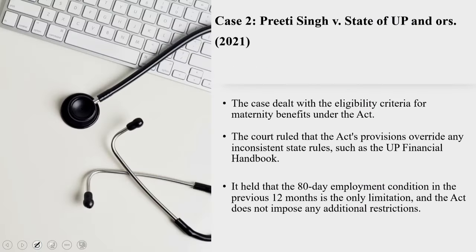Similarly, in Preeti Singh versus State of UP and others 2021, the Allahabad High Court addressed the issue of maternity leave eligibility, focusing on the interpretation of state financial rules that conflicted with the Maternity Benefit Act 1961. The petitioner Srimadhi Preeti Singh, an employee of the State of Uttar Pradesh, had previously availed maternity leave until December 28, 2019. She applied for a second maternity leave from March 17, 2021 to October 12, 2021. However, her application was rejected on March 16, 2021 — just a day before the leave was set to begin — based on the stipulation in the Uttar Pradesh Financial Handbook requiring a minimum gap of two years between successive maternity leaves.